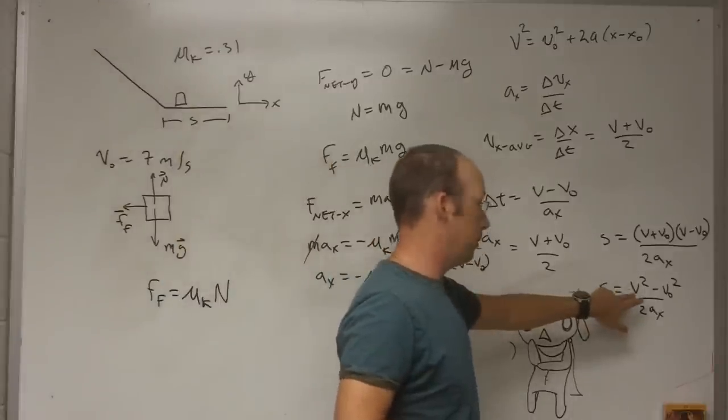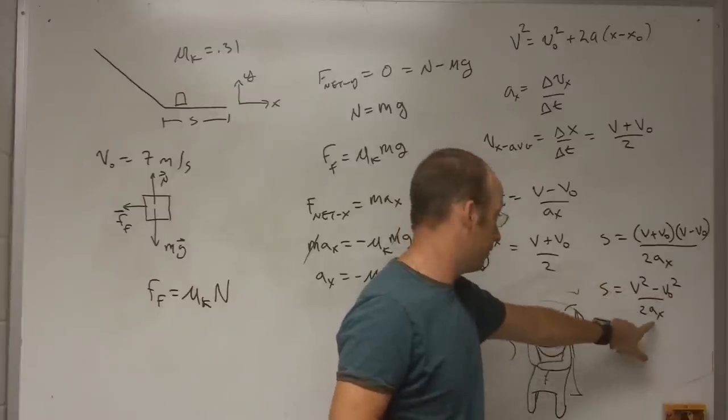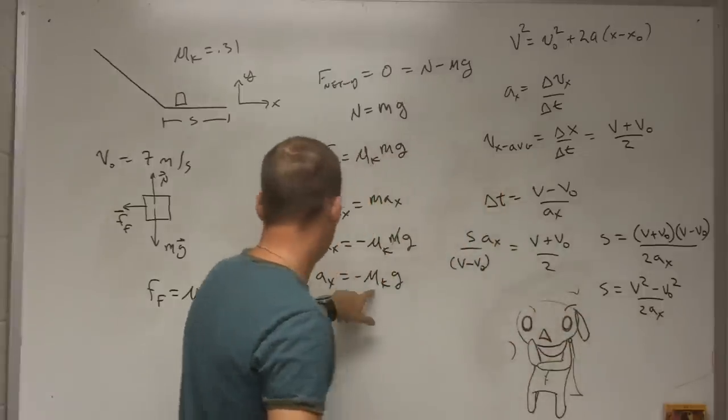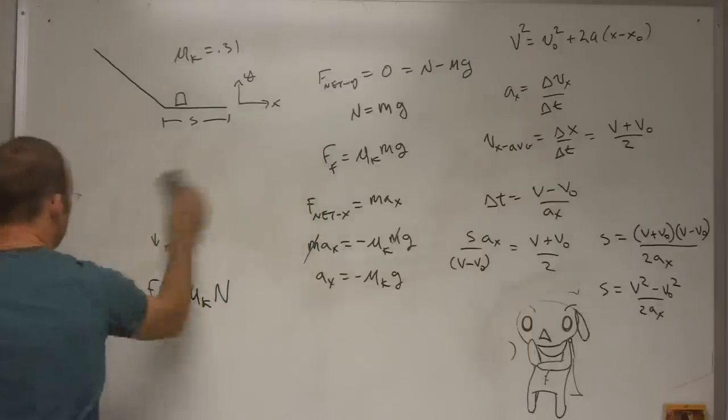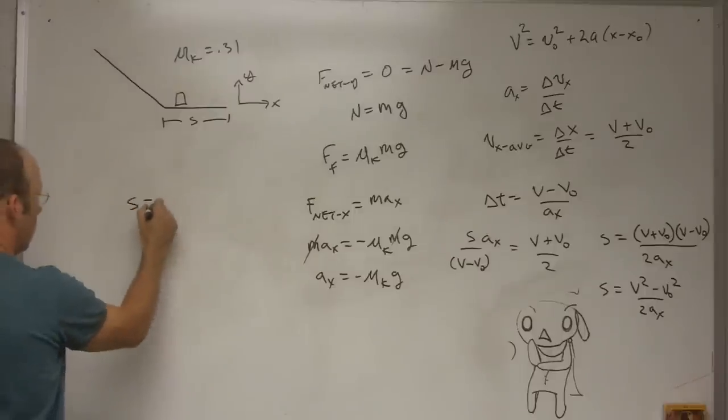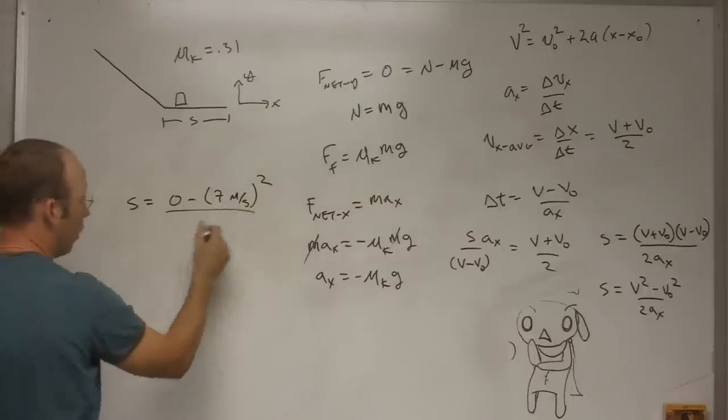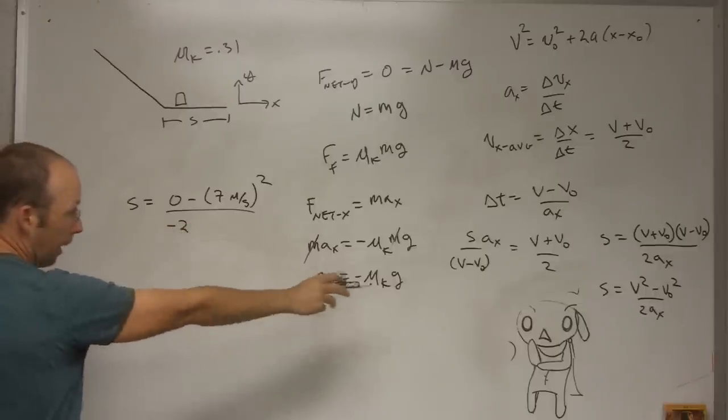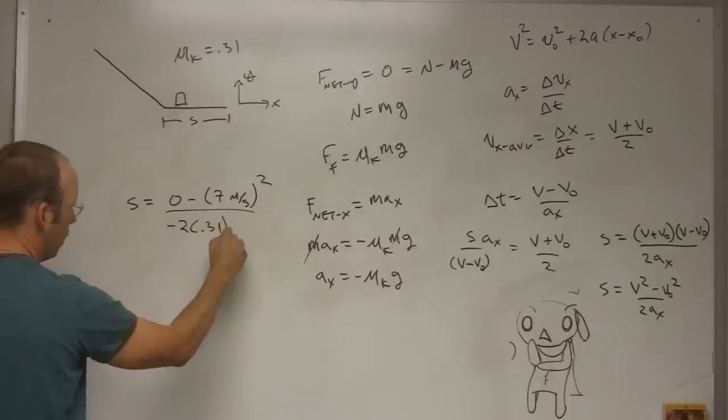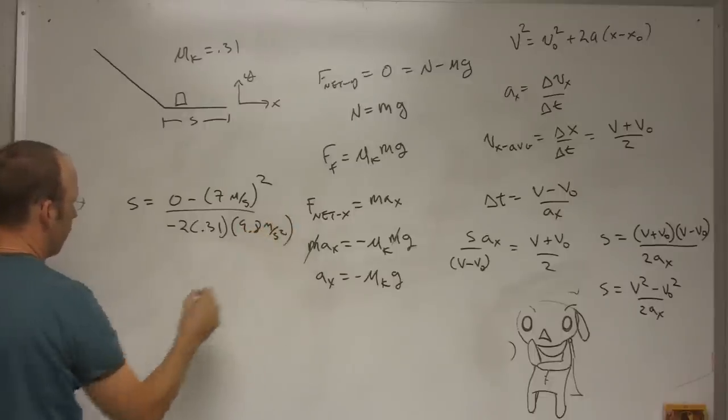My final velocity is going to be zero. I want them to stop. My initial velocity I'll use is 7. And the acceleration is this value right here, negative. So let me put that in. So zero minus initial velocity squared, 7 meters per second quantity squared, over 2, negative 2 times ax, which is 0.31 times 9.8.